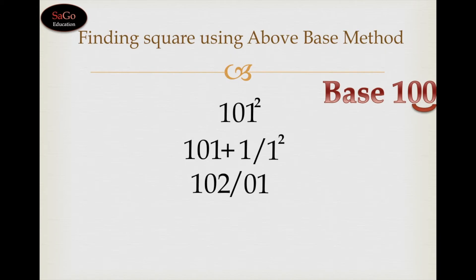And multiply 102 by 1 because we have taken the base 100. 102 multiply by 1 is 102, so the answer is 10201.